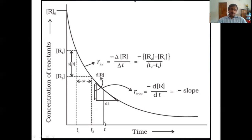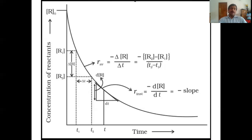If you want to calculate the rate at a particular moment t, draw a tangent through this point and calculate its slope: minus d[R] divided by dt. Using this graphical method we can measure instantaneous rate.